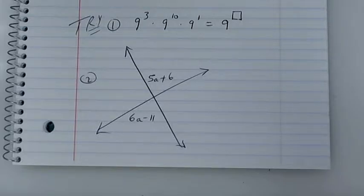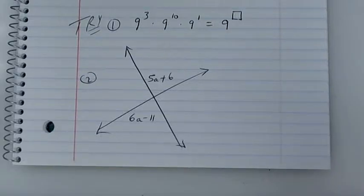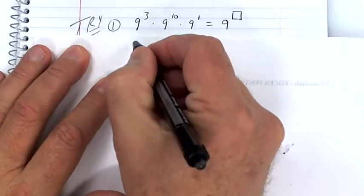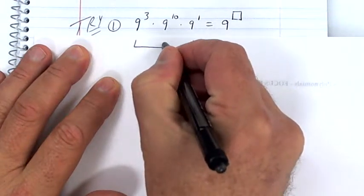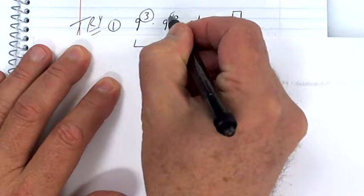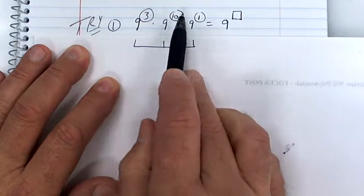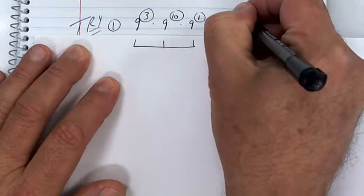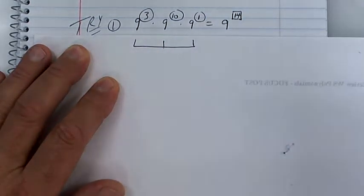Let me go over it since you had it yesterday. You have the same base, which is nine, and you're multiplying, so you add the exponents. 10 plus 1 is 11, 12, 13, 14 — on your test you should have 9 to the 14th power.